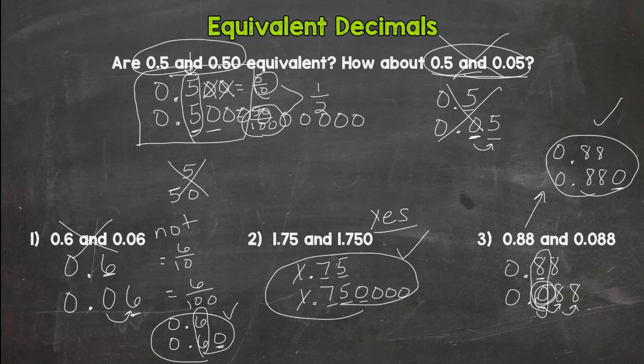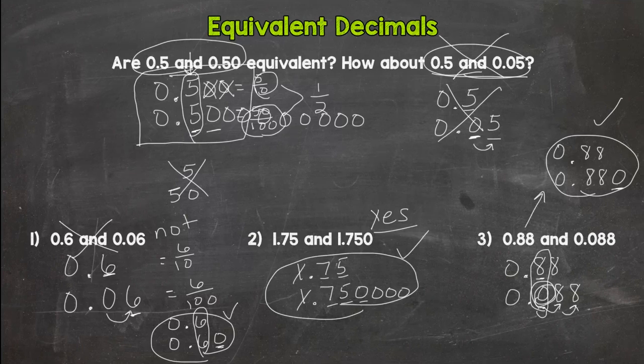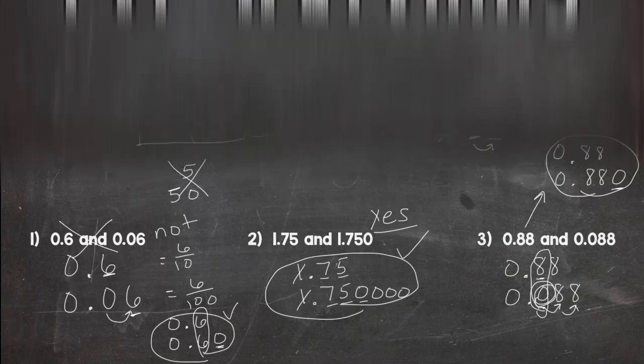So those are the basics of equivalent decimals, which you'll be using when ordering, comparing, multiplying, dividing, adding, and subtracting decimals. Those placeholder zeros are definitely going to come into play. If you think you have equivalent decimals down, go ahead and check out the mastery check — I dropped the link below in the description. Click on that and see if you know your stuff when it comes to equivalent decimals. I'll see you over at the mastery check — thanks for watching.